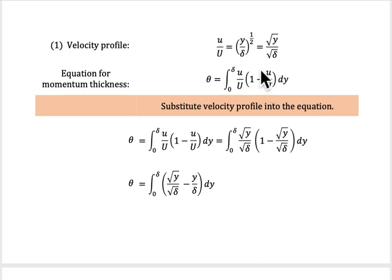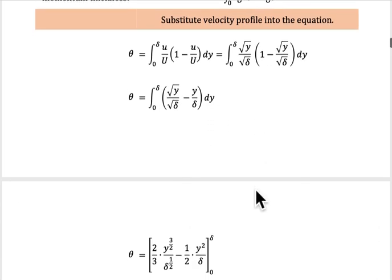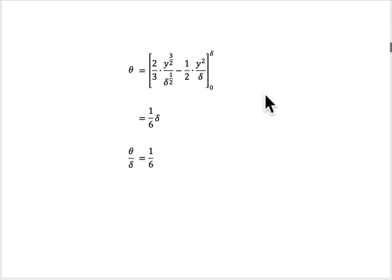So what you need to do is, again, you need to substitute the value of u over U here with the velocity profile given in the questions. Then you need to solve the integral process. The limit is between 0 to delta, and if you solve it, you could get that theta is equal to 1 over 6 delta, or you could write theta over delta is equal to 1 over 6.